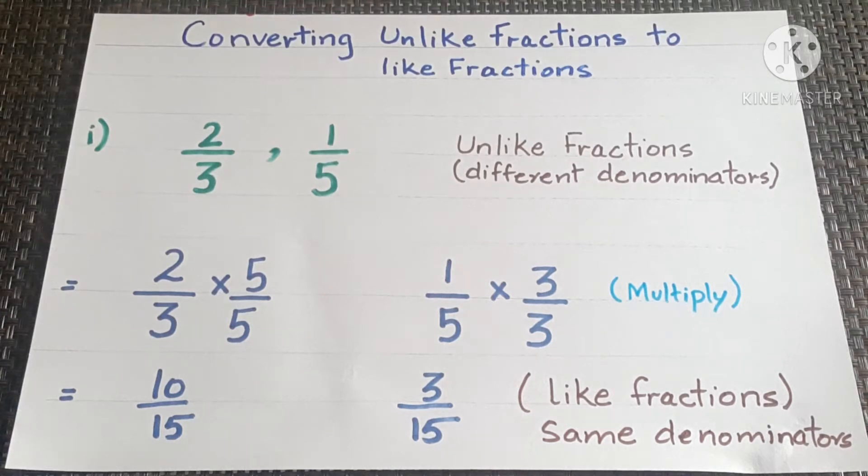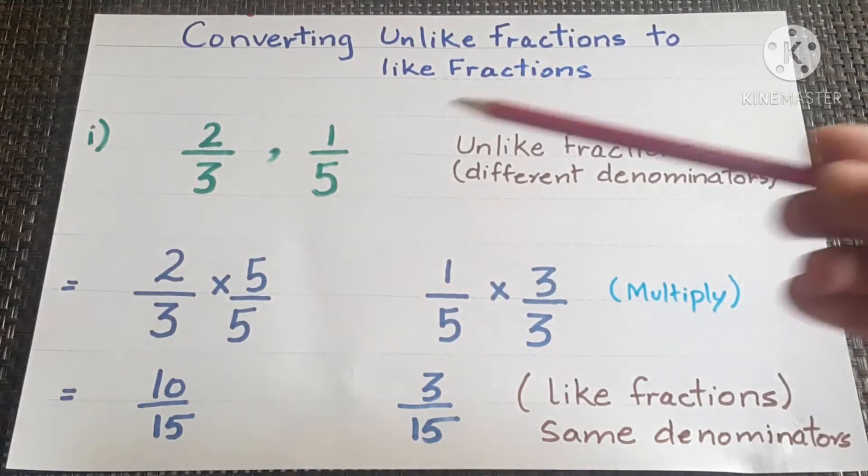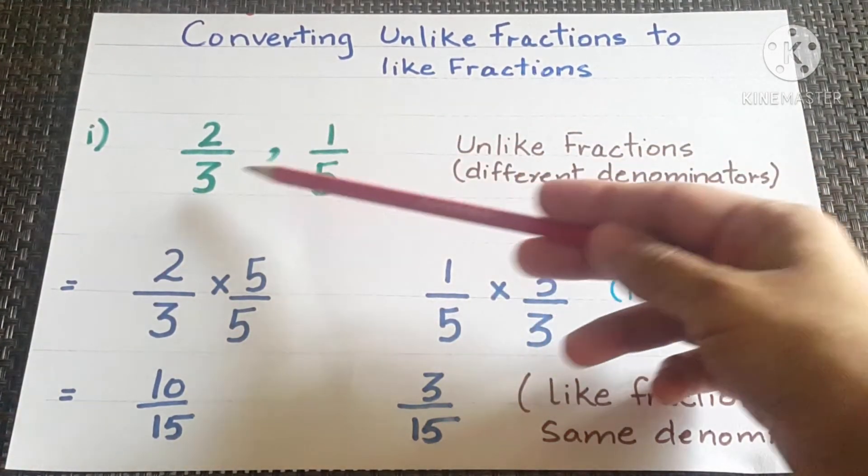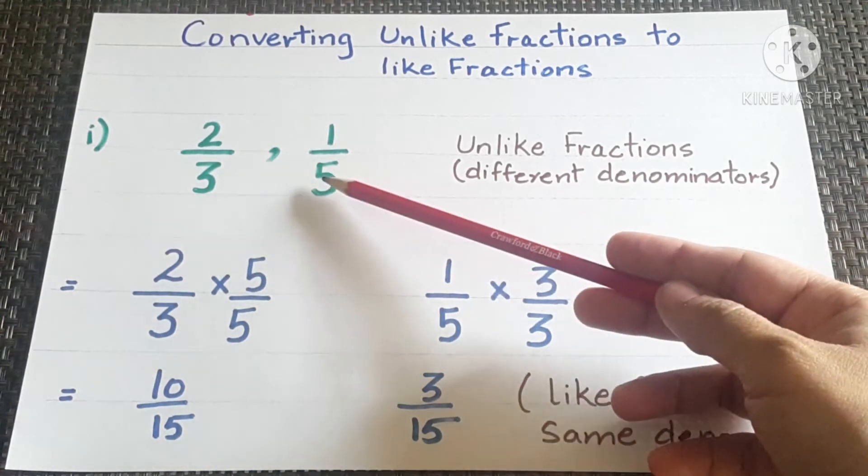Today we will learn how to convert unlike fractions into like fractions. In this question, 2 by 3 and 1 by 5 are unlike fractions because they have different denominators.